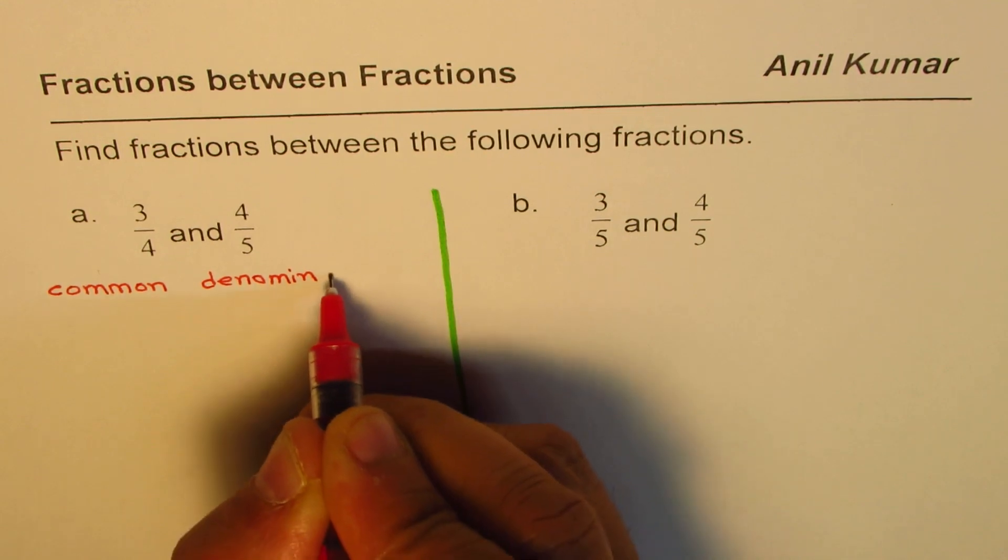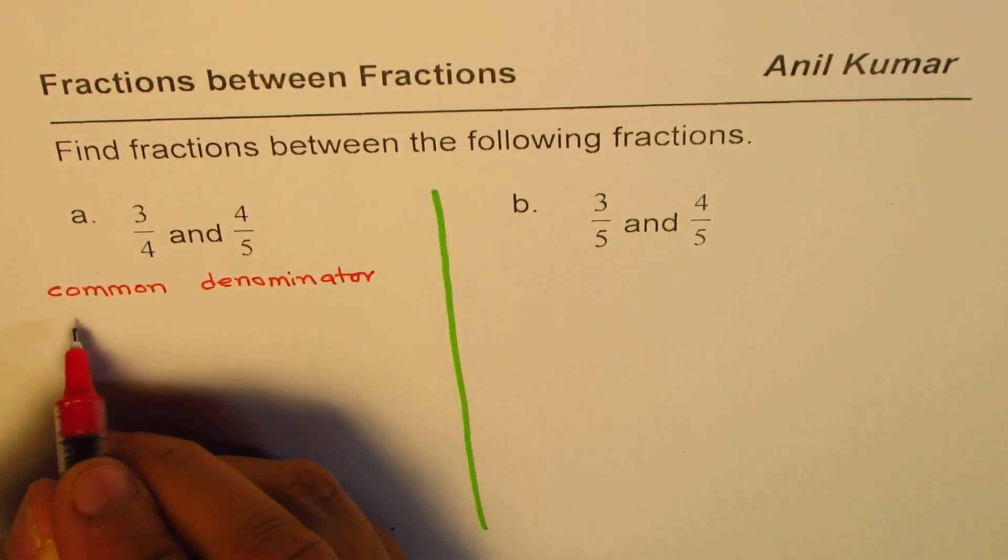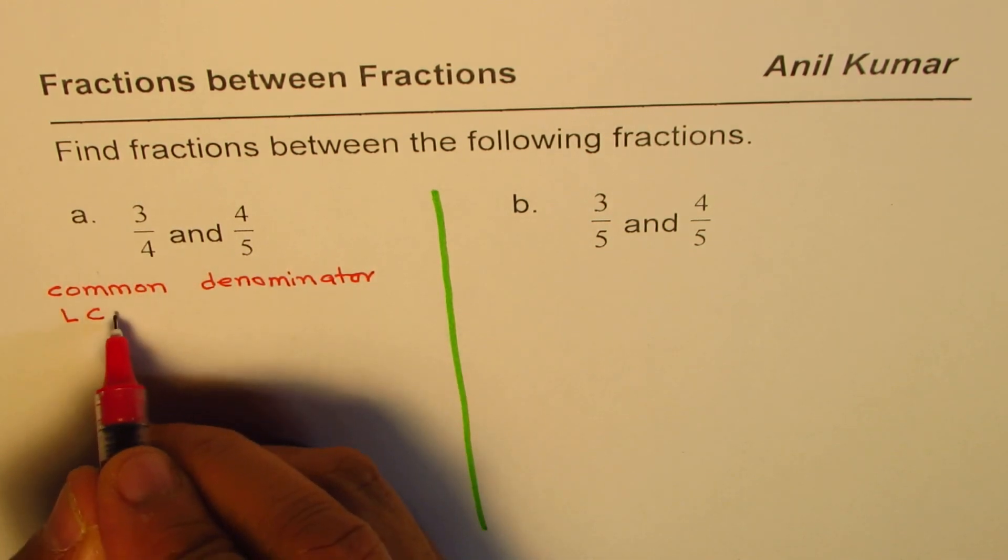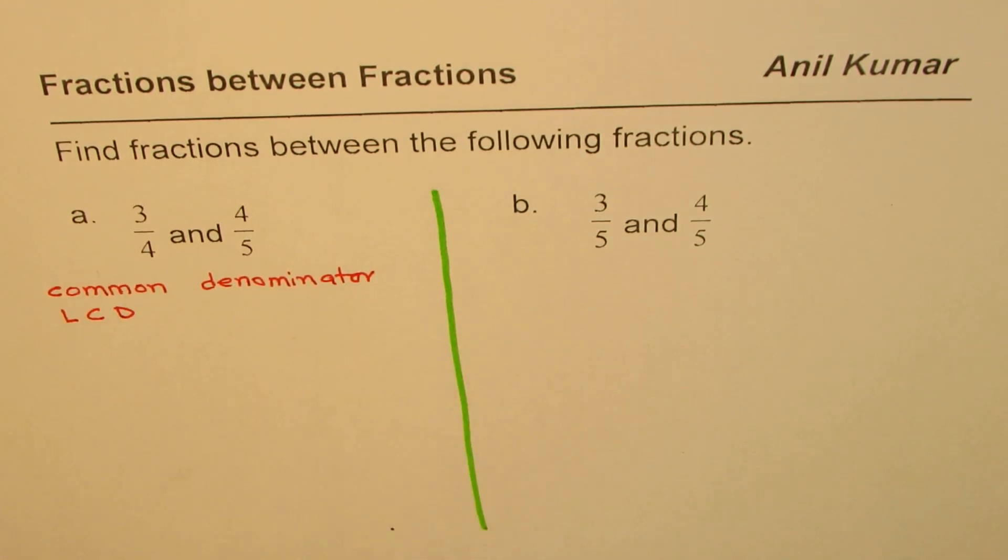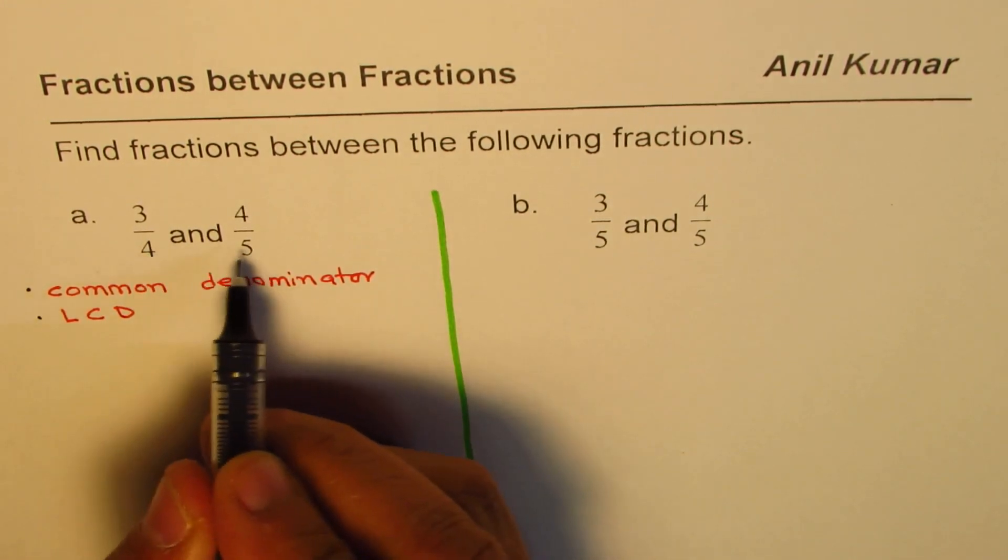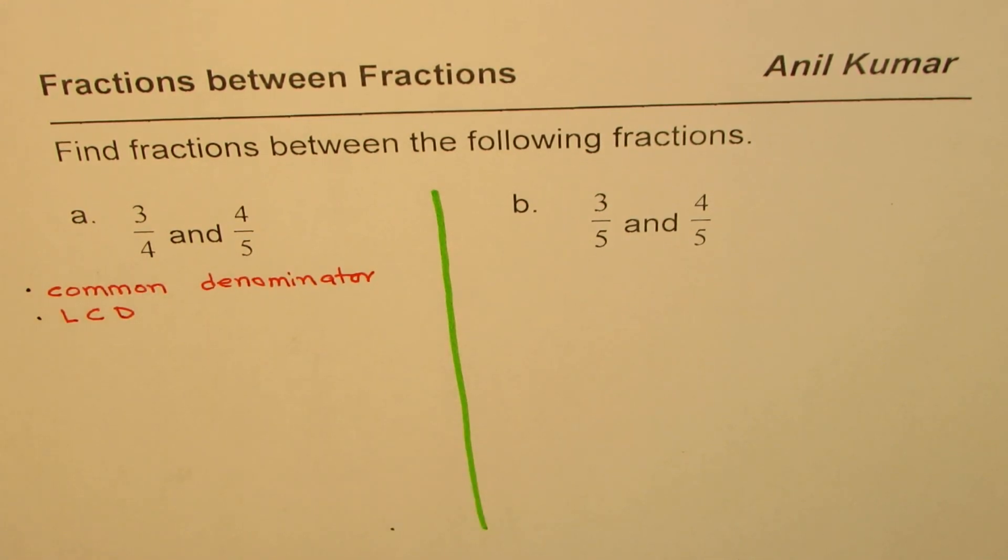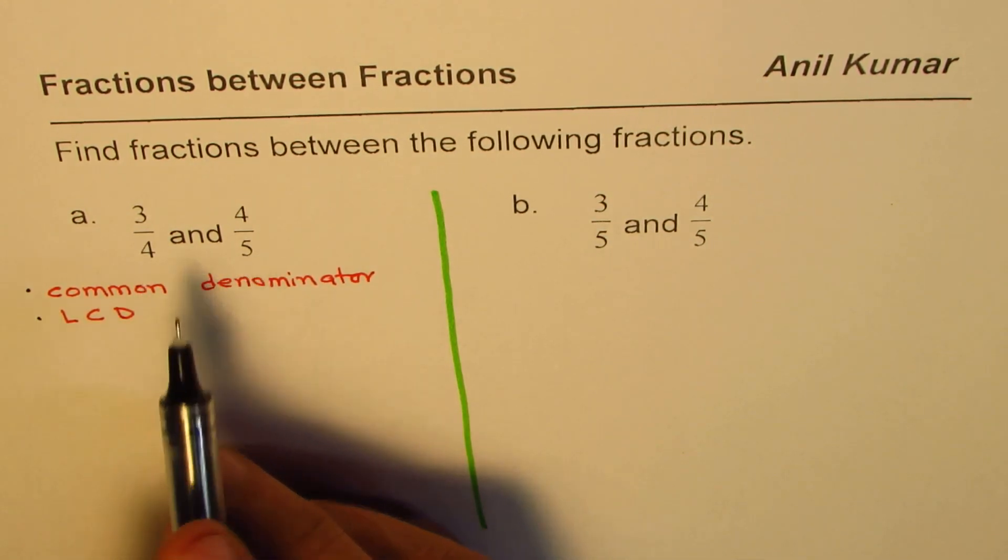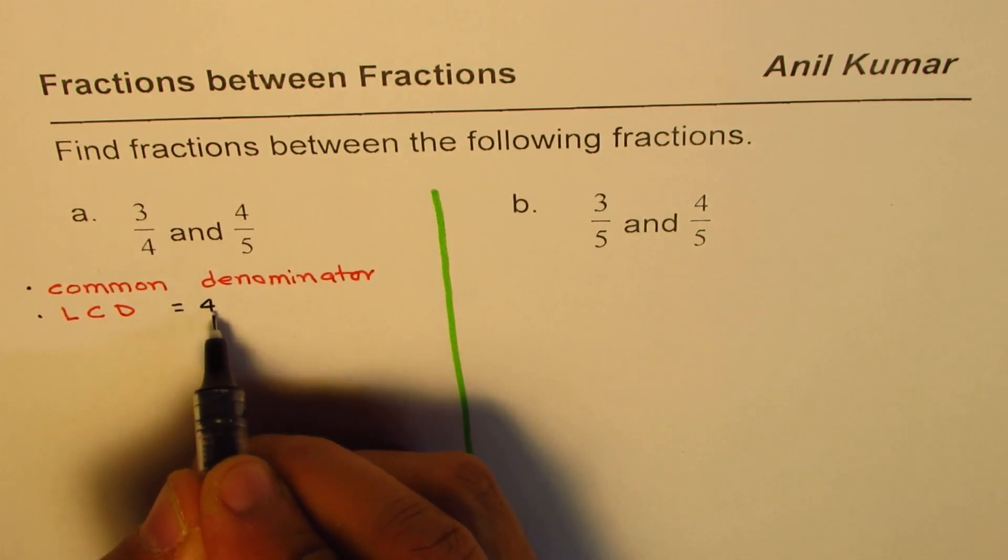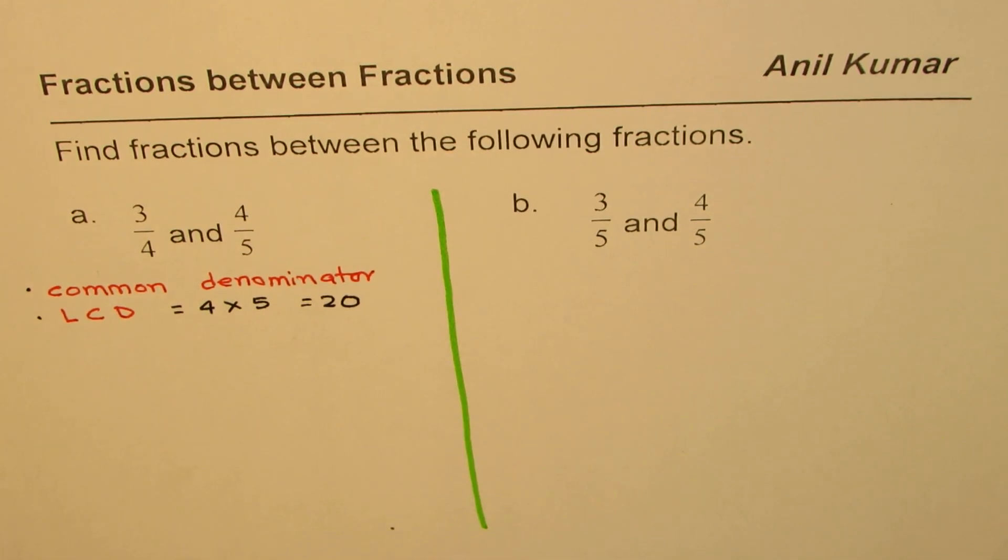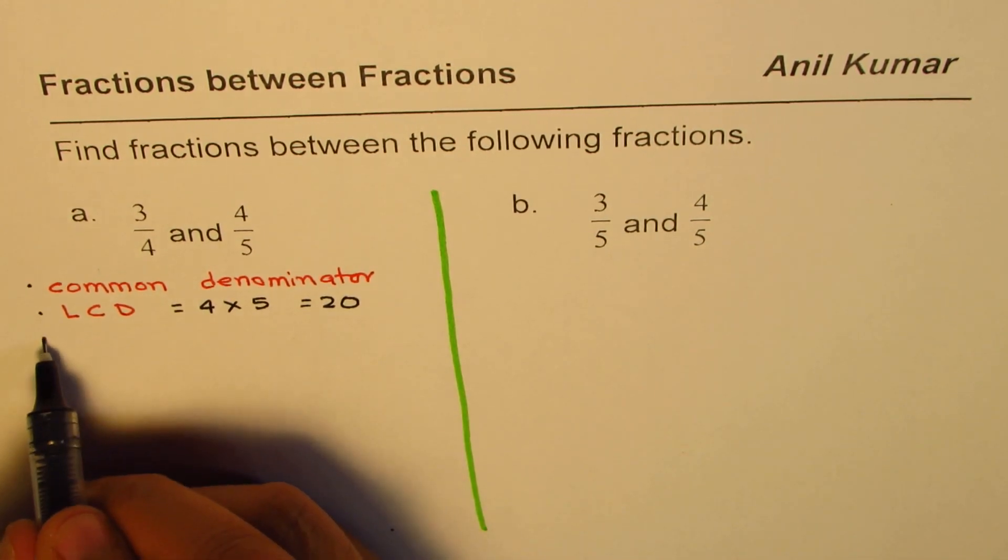How do we get common denominator? The best way is to find the lowest common denominator. You could have any common denominator but you could find lowest common denominator to start with. So these two fractions have 4 and 5 as their denominators. 4 and 5 do not have any common factors. So the lowest common denominator in this case is 4 times 5 which is 20. So lowest common denominator is 20 and what do we need to do next?